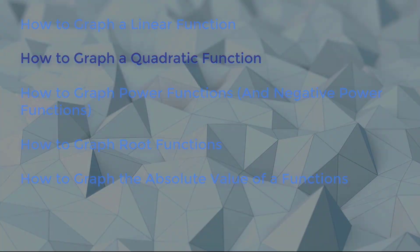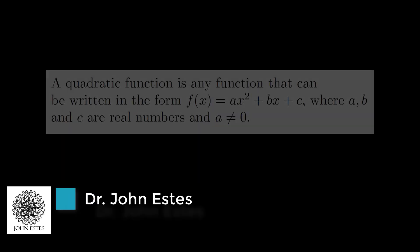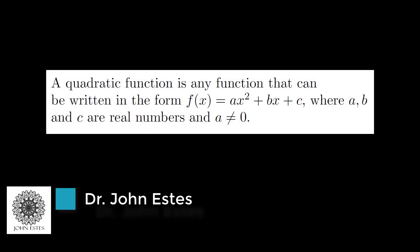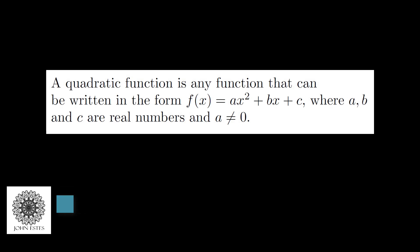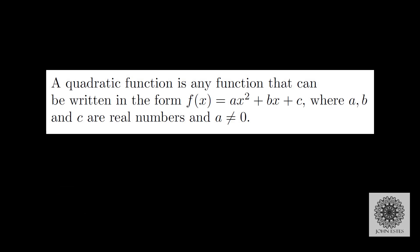Another really common function in algebra is the quadratic function. We define a quadratic function, also called a secondary function, as f(x) = ax² + bx + c, where a, b, and c are real number constants. And a can't be zero, otherwise it's not really quadratic anymore.